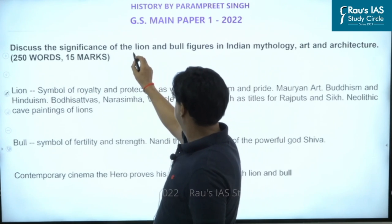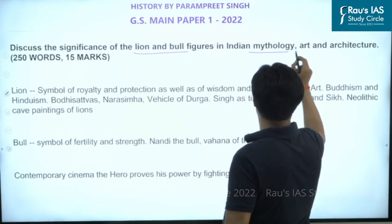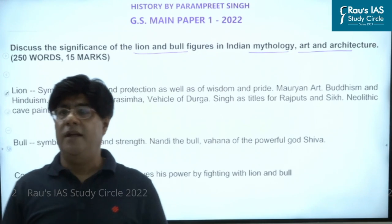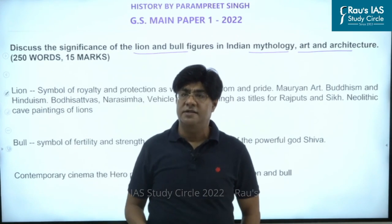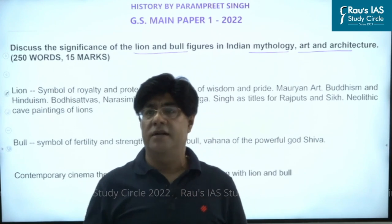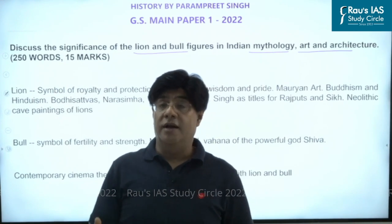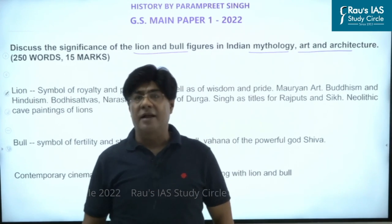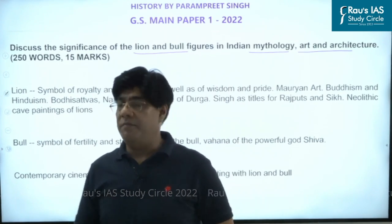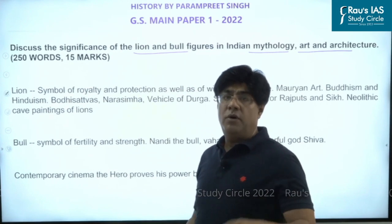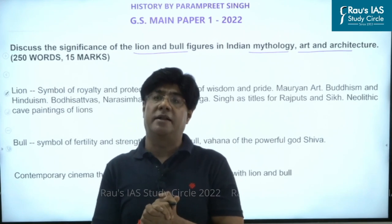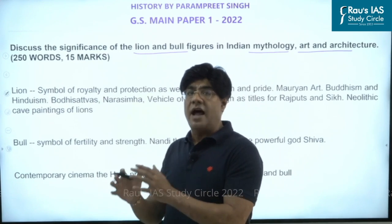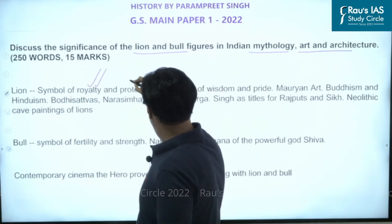The third question from the culture portion asks: discuss the significance of lion and bull figures in Indian mythology, art, and architecture. This was a very easy question. In Indian mythology, the lion symbolizes royalty, protection, wisdom, and pride. Even with kings, the lion has been associated — like Tipu Sultan being called the Tiger of Mysore because the word tiger symbolizes his strength and power. In the case of the lion, it is associated with the symbol of royalty and protection.